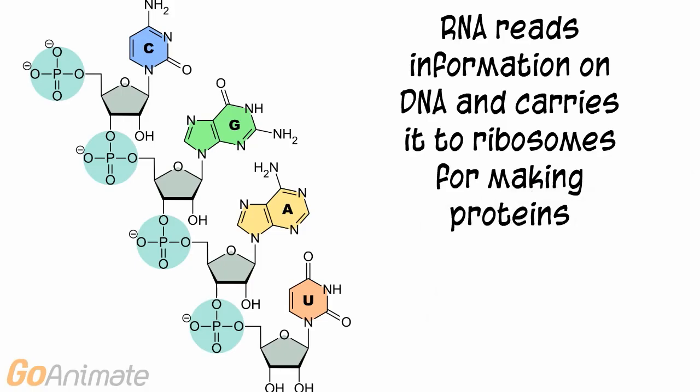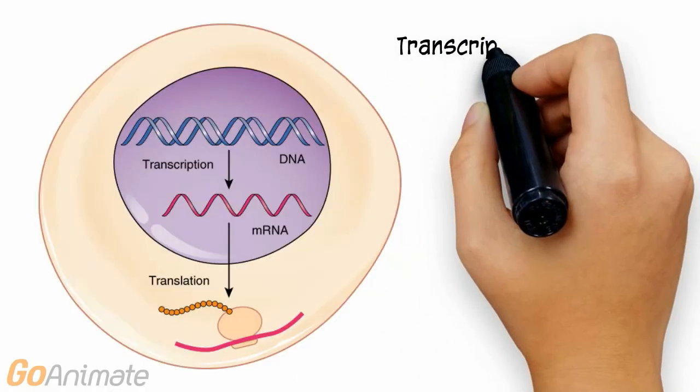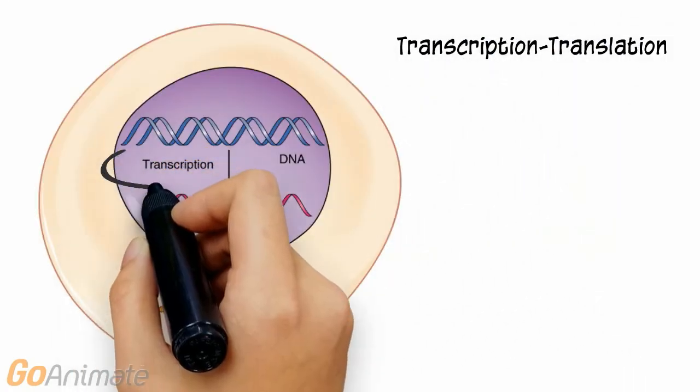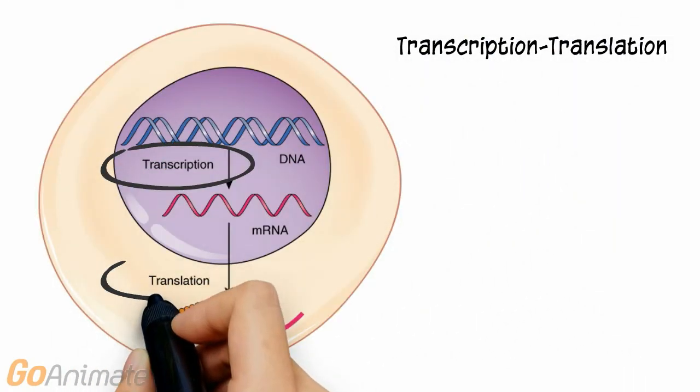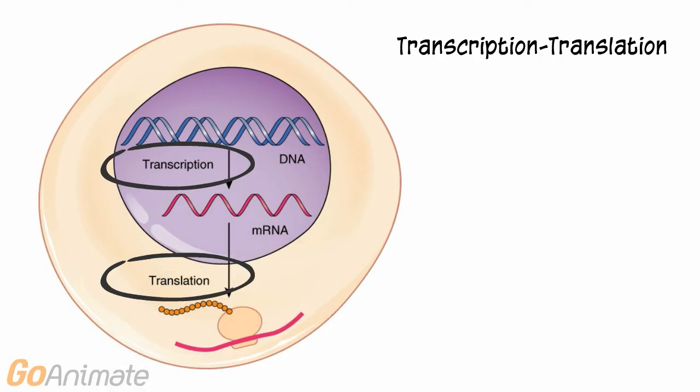RNA can read information on DNA and carry it to ribosomes for making proteins. This process is called transcription and translation. In transcription, RNA reads the information on DNA.